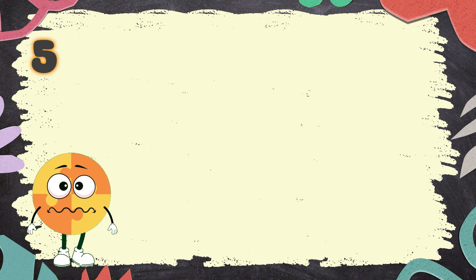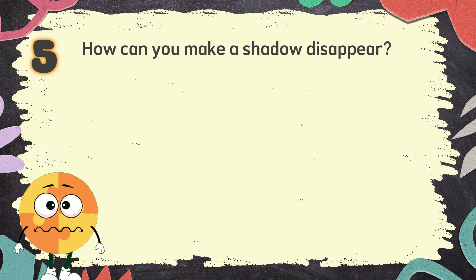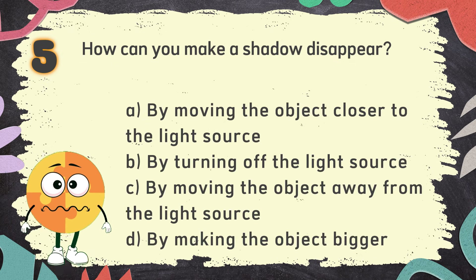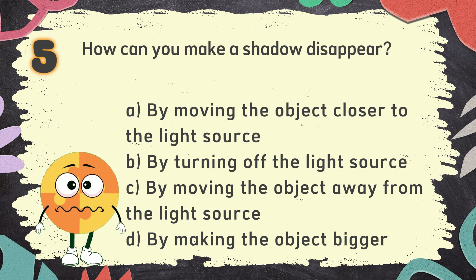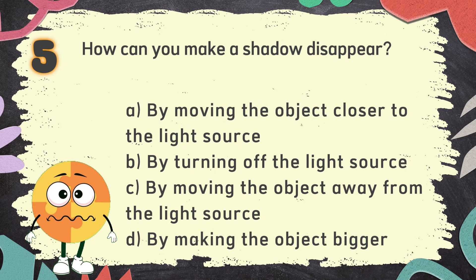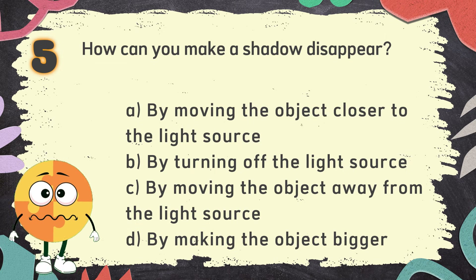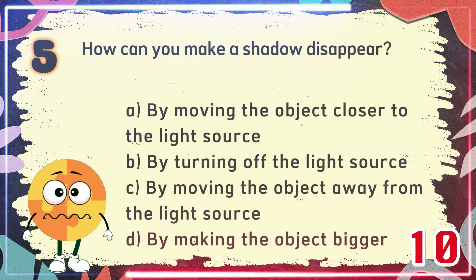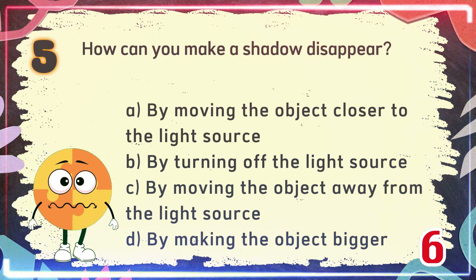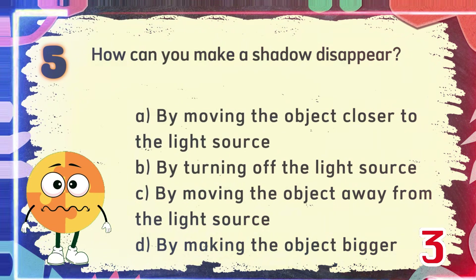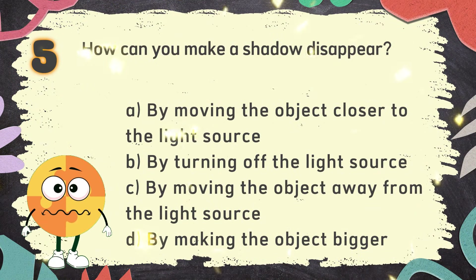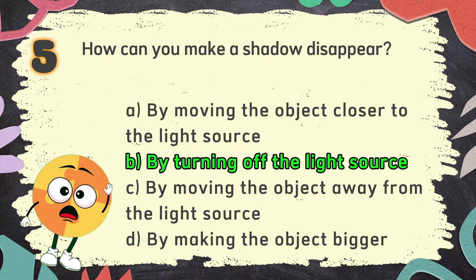Number 5. How can you make a shadow disappear? The choices are: A. By moving the object closer to the light source, B. By turning off the light source, C. By moving the object away from the light source, D. By making the object bigger. The correct answer is B: By turning off the light source.